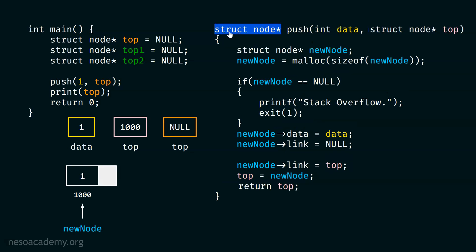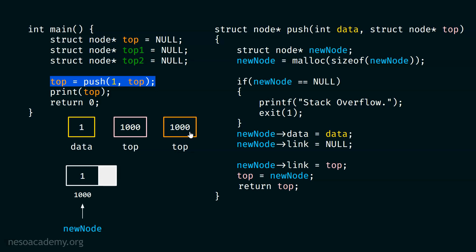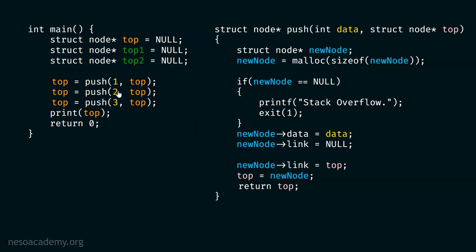And here, we have to replace void by struct node star, because top is a pointer to a struct node. And in main, we must write top equal to push. In this way, this top pointer will receive address one thousand, so null gets replaced by one thousand. We can then call multiple push functions to push all the elements onto the original stack.